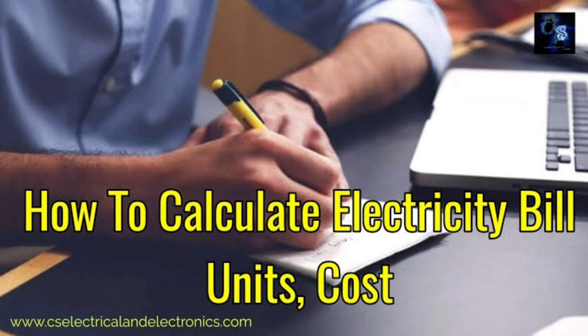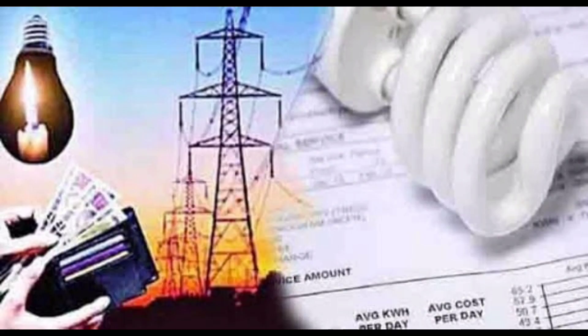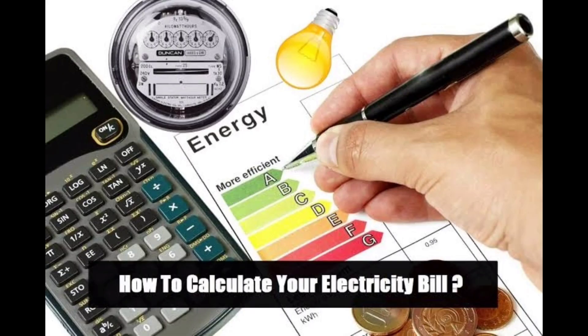If you are talking about the EB Bill, the same method is used to calculate it. If you have a load, you have a unit consumption. You have to enter the unit consumption — you will need to know the amount. Once you have a reading, if you have a unit, you will note it down and calculate the units.